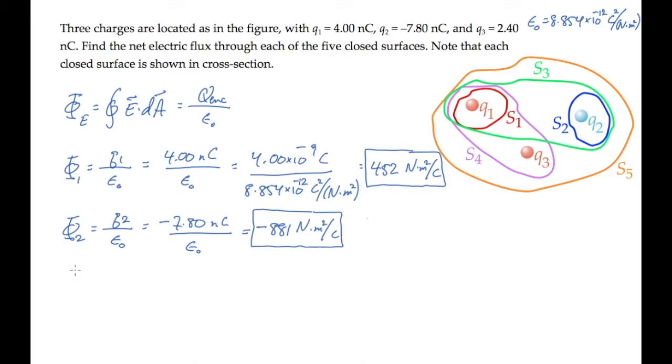Surface three is the green one, and it encloses both charge q1 and q2. So we add those together. One's positive, one is negative, ending up with the net enclosed charge of negative 3.80 nanocoulombs, which gives us this result for the flux after dividing by epsilon naught.